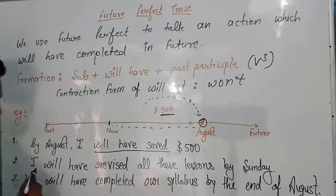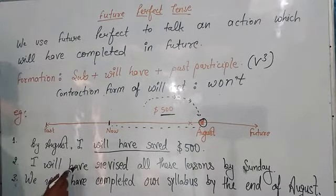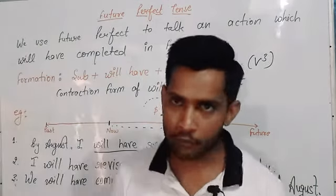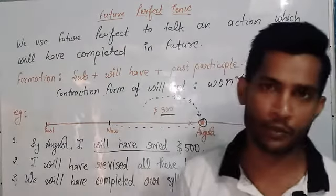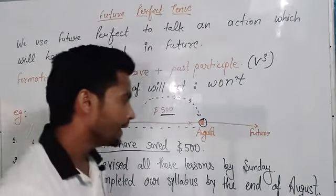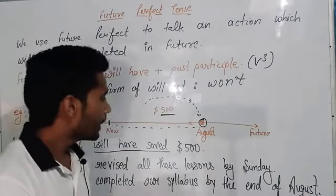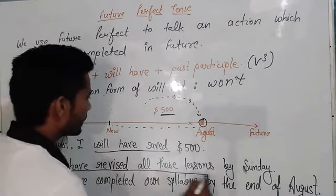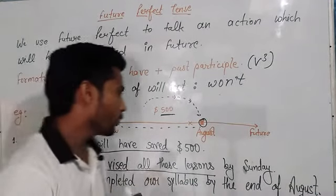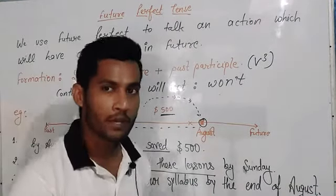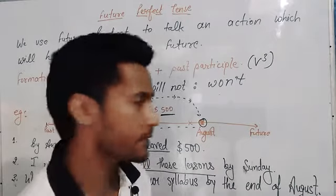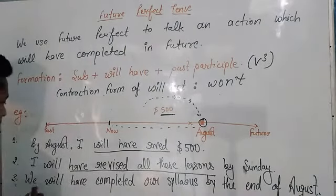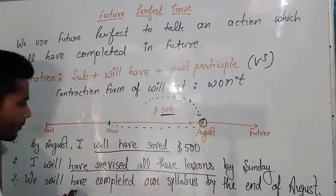Now let's talk about the second sentence: 'I will have revised all these lessons by Sunday.' This means we have three or four days' time and we have to revise some lessons, but I think I will have revised all these lessons. Here we have focused on revising lessons.